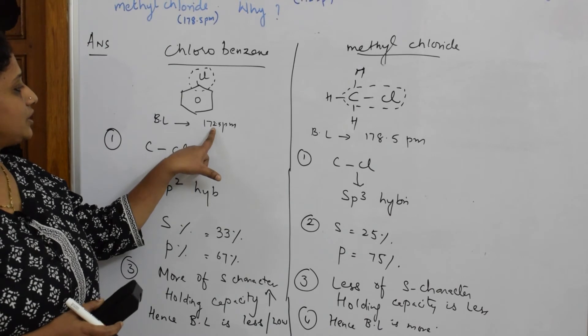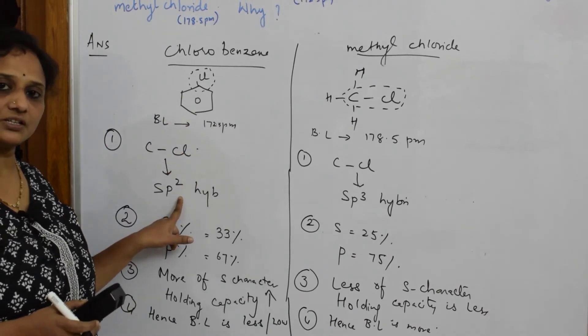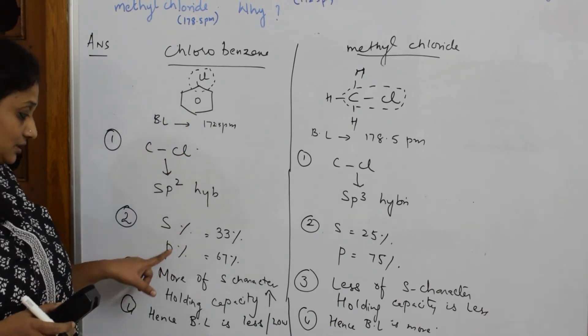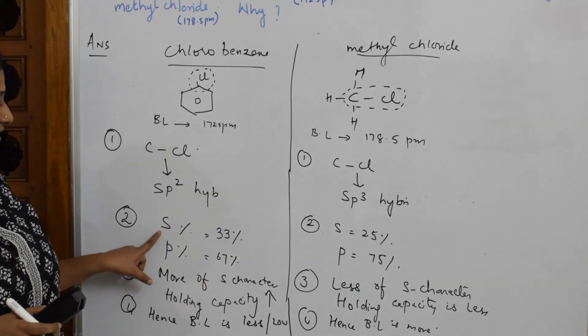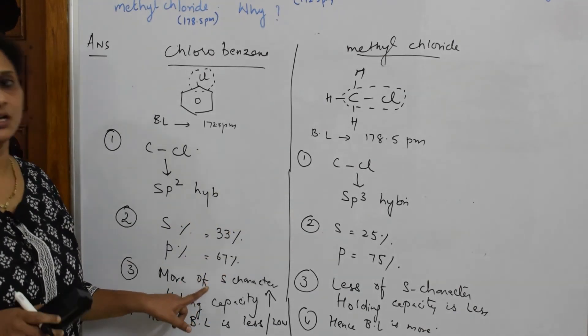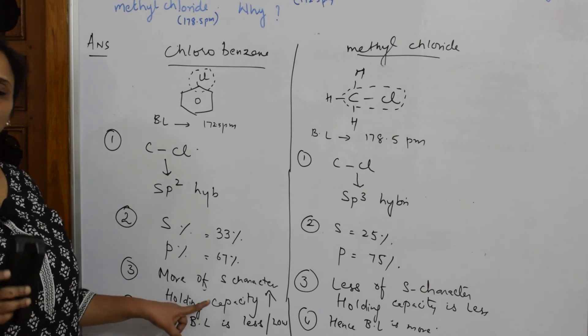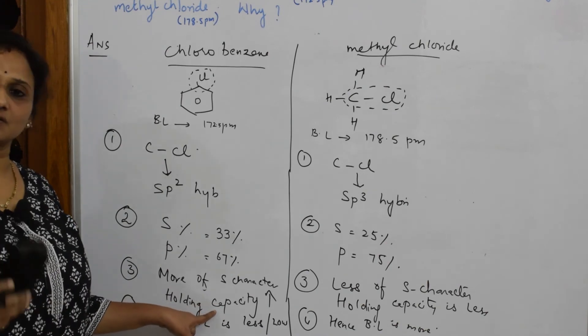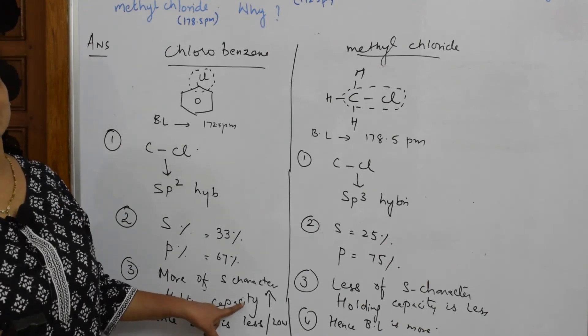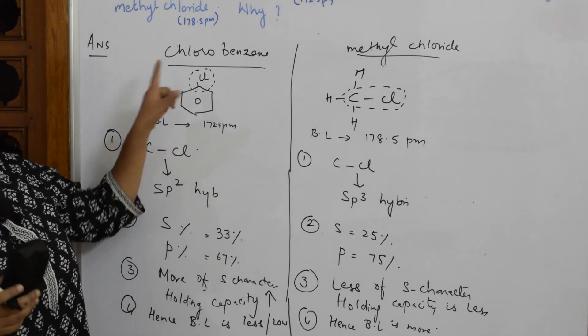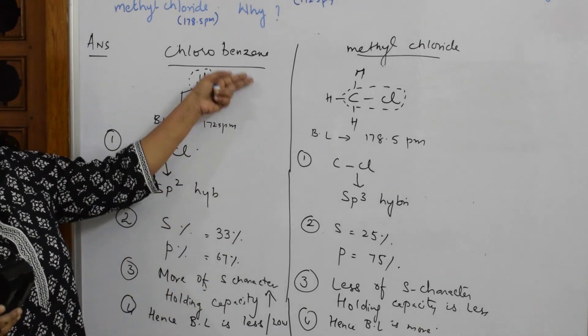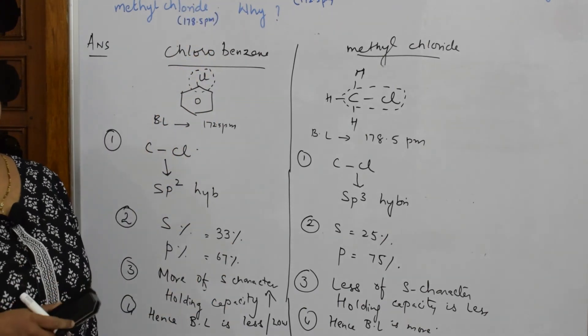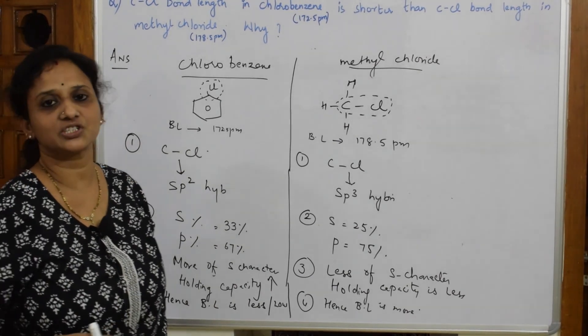So just be careful. Whenever they've given you this, try to write in terms of hybridization, try to write the s character and p character in both of them. Then immediately say if s character is more, holding capacity will be more. If the holding capacity is more, it is closer to the nucleus. If it is closer to the nucleus, automatically the bond length decreases. That's the question, whatever is given to us is reasoned clearly. Thank you for watching.